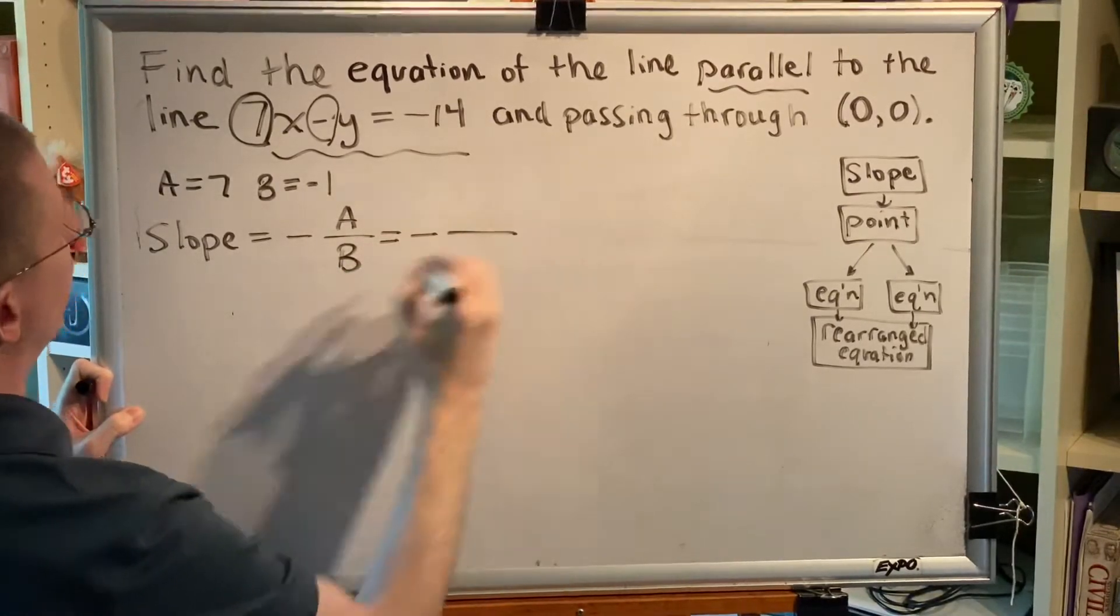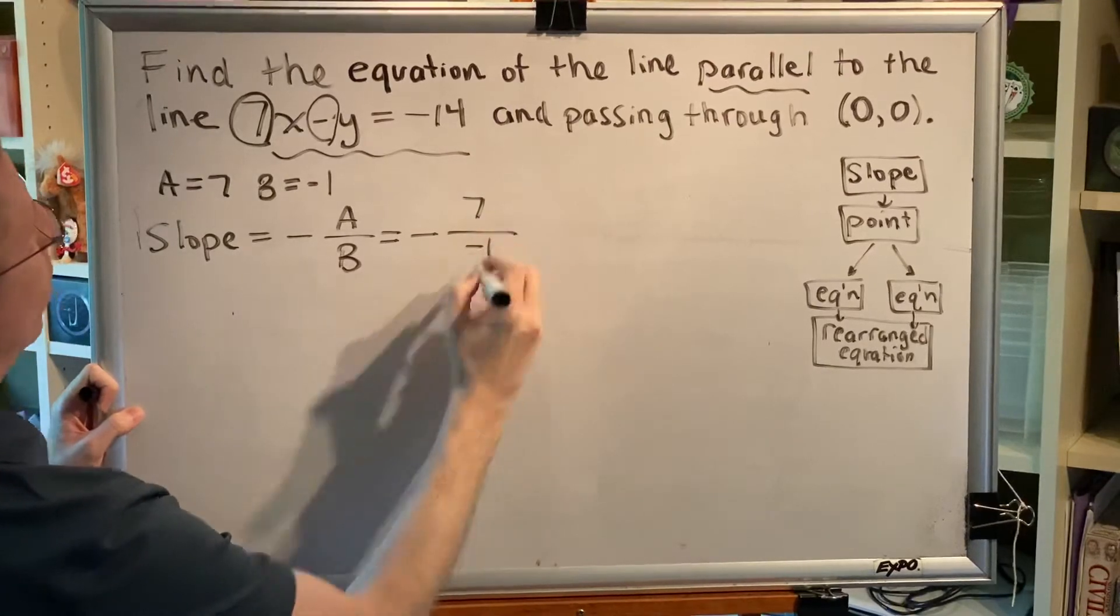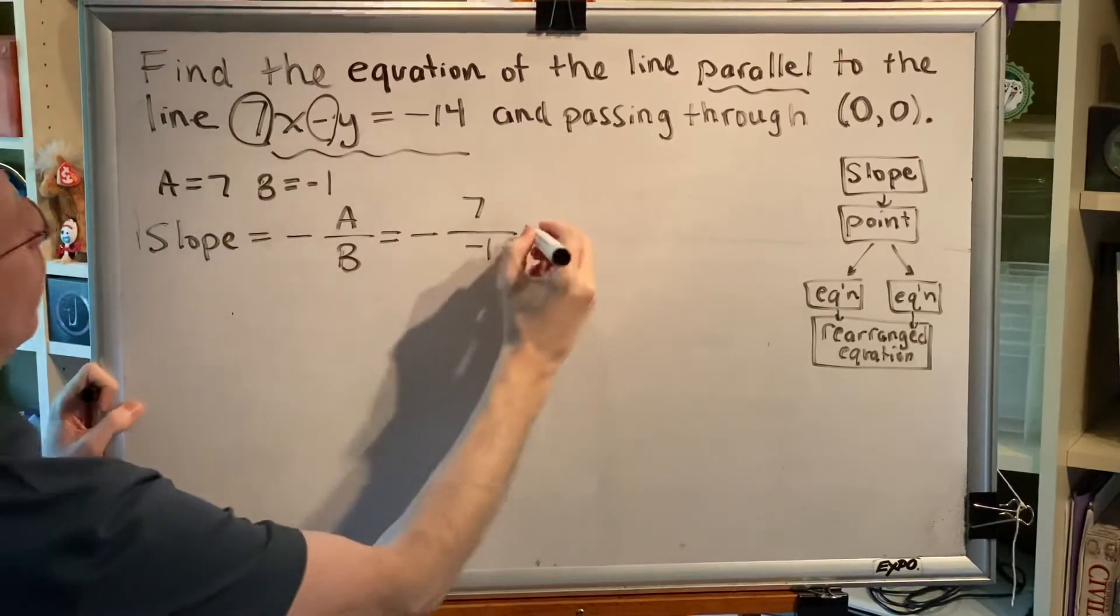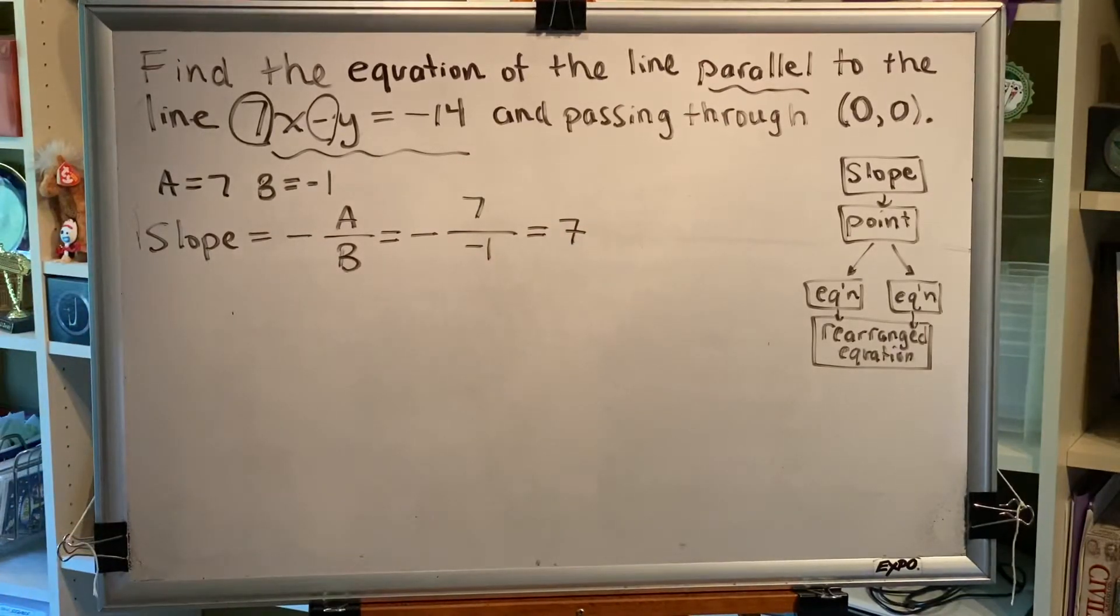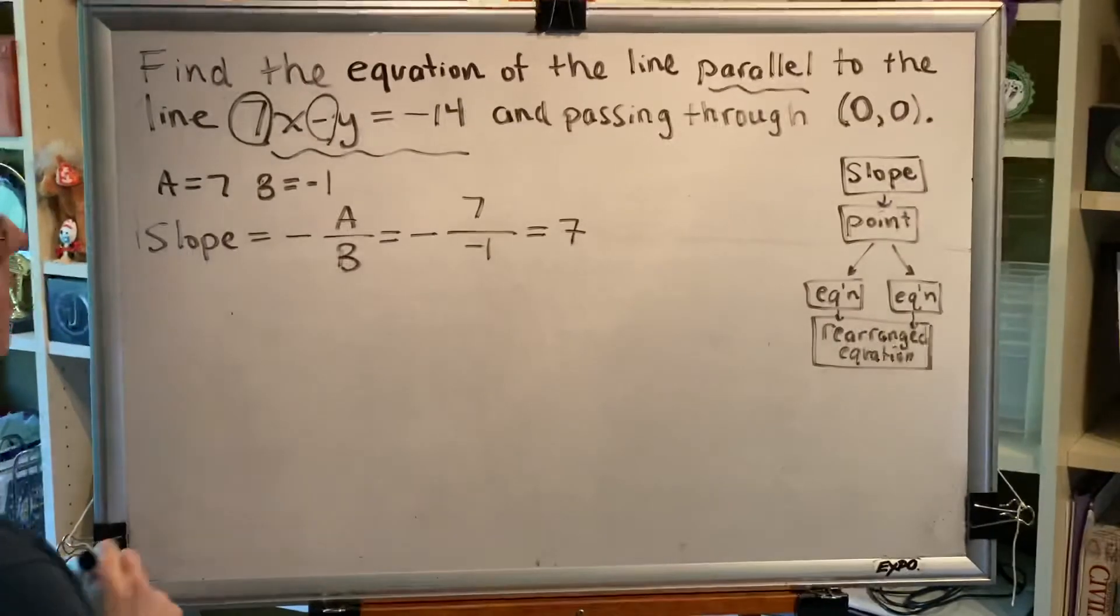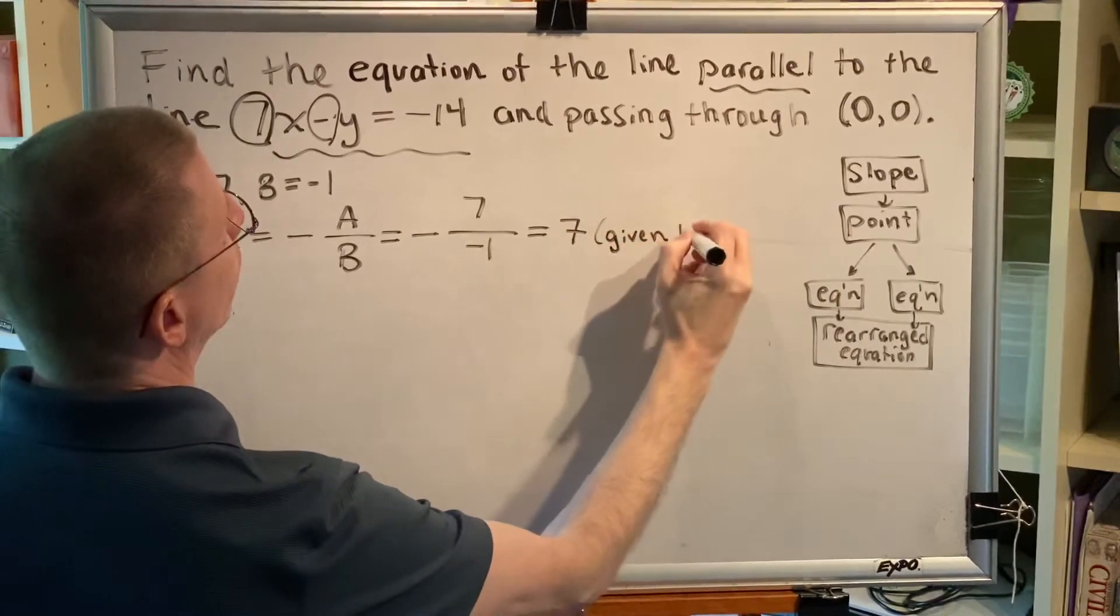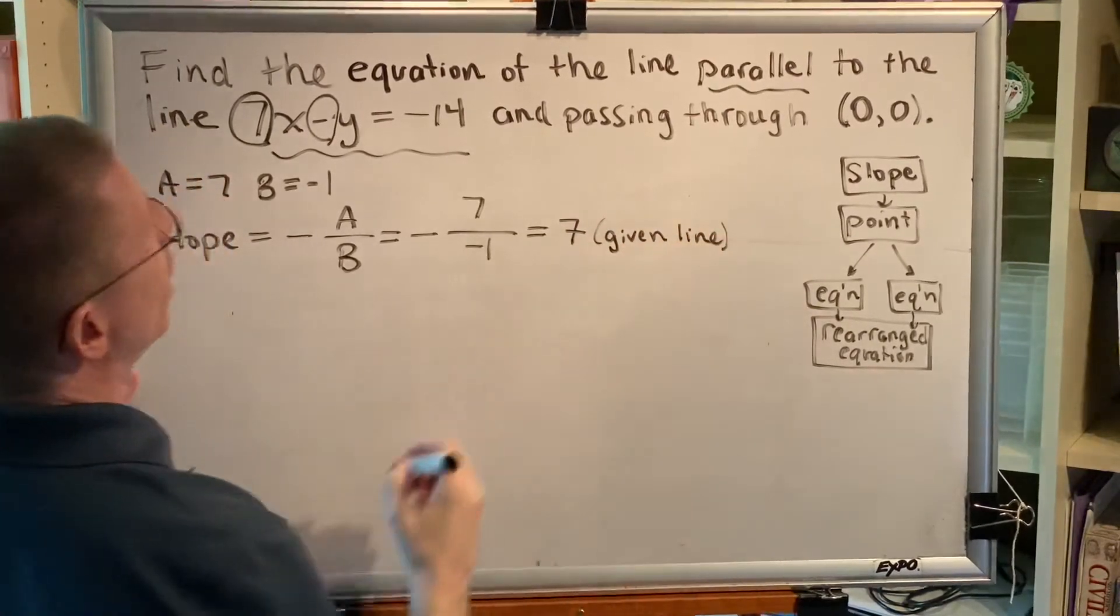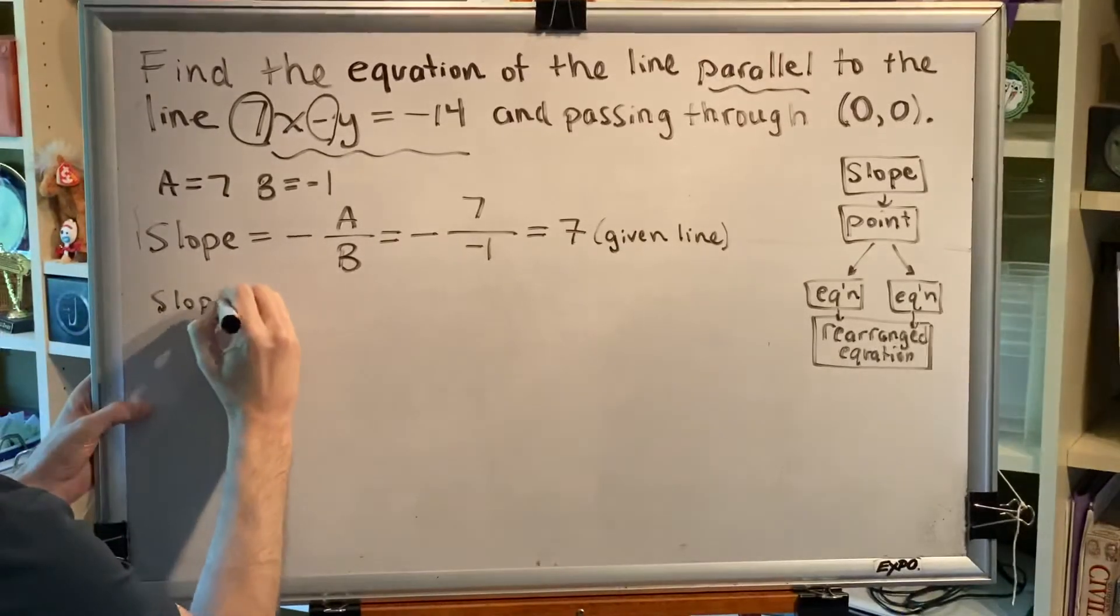So we get negative seven over negative one. We have an even number of negatives which makes a positive, and our slope is seven. So the slope of the given line is seven, and because the problem says parallel, the slope of our line will also be seven.